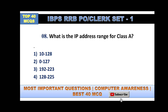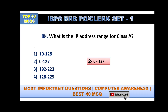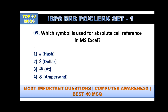Question eight: what is the IP address range for Class A? In networking there are five classes. Class A ranges from 0 to 127, Class B from 128 to 191, Class C from 192 to 223, Class D from 224 to 239, and Class E from 240 to 255.